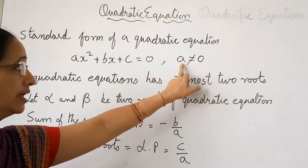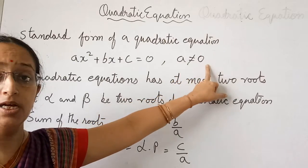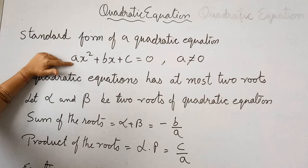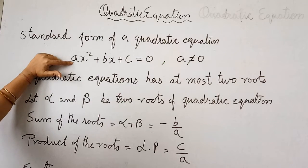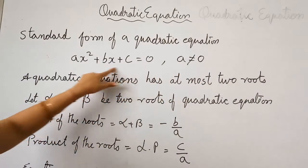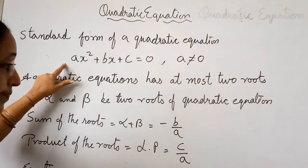The most important thing to remember is that a should not be 0. The coefficient of x² should not be 0. It can be anything - negative, positive, or a fraction - but it should not equal 0. This is the standard form of quadratic equation.